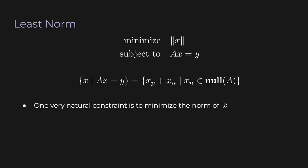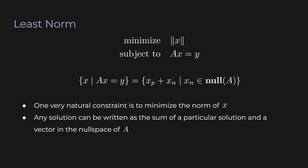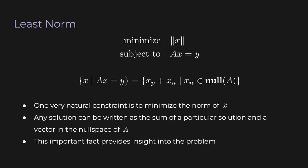It turns out that any solution to Ax equals y can be expressed as some particular solution plus some vector in the null space of A. The particular solution xp is just any x that solves Ax equals y for a given A and y. If you know even just one solution xp, you can find all the other infinitely many solutions by taking each vector in the null space of A and adding it to xp. This fact provides important insight into finding the x with the minimum norm.